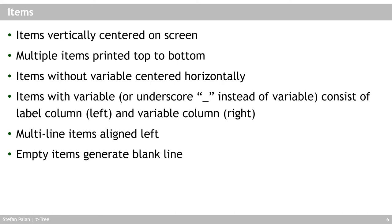If you use an underscore instead of a variable, z-Tree prints the label in the column format but without displaying a variable value. Multi-line items — text longer than the screen width — are automatically left-aligned instead of centered, which may be unexpected behavior. You can also put an empty item in a box to generate a blank line, useful for separating groups of text items.